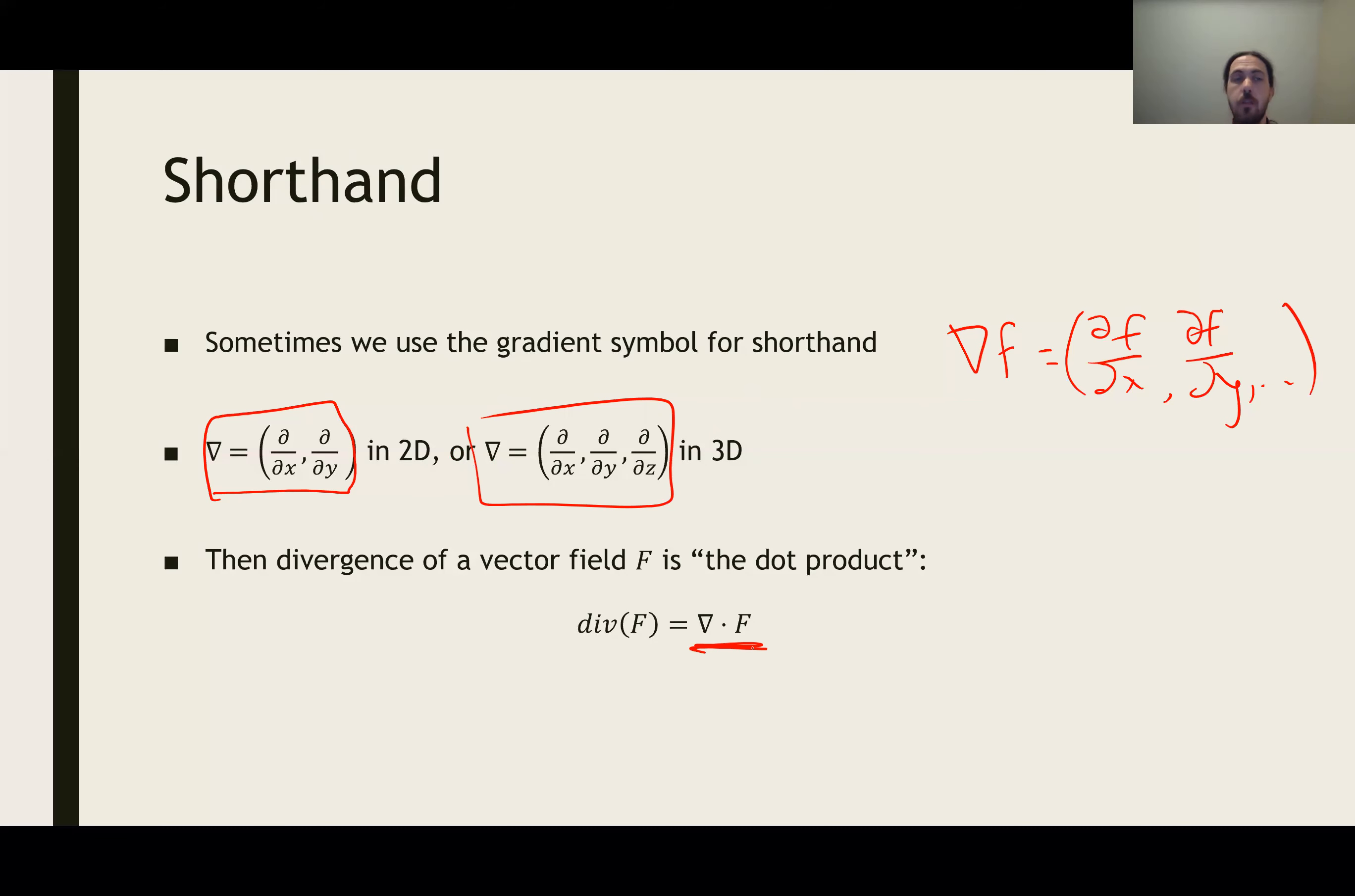It's like taking the dot product where we multiply ∂/∂x times the first component, ∂/∂y times the second component, et cetera, and then we add all those contributions up, and that measures the divergence of a vector field.